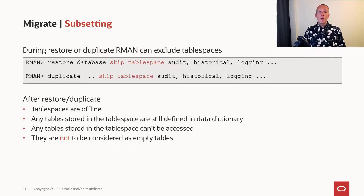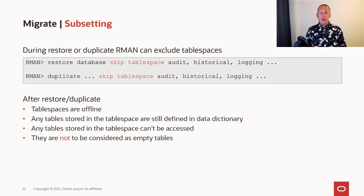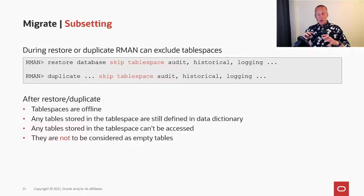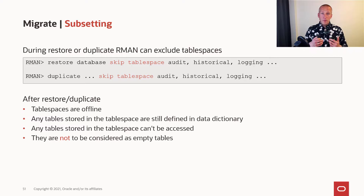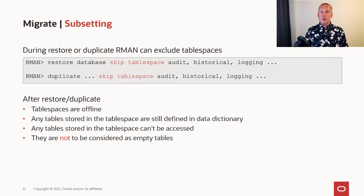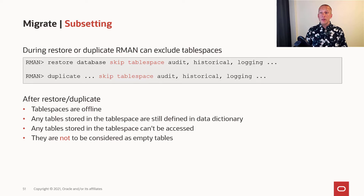If you are using RMAN to restore or duplicate the database, you can also do subsetting in some scenarios. If the subsetting data is totally isolated in one tablespace, you can skip it when you do the restore or the duplicate. Those tablespaces will be marked as offline, and you will get an error if you try to query a table that was in a tablespace that was skipped. So you shouldn't consider those tables as empty tables in your target database, and you might need to clean up in the data dictionary afterwards.